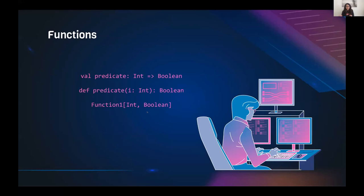In general, for a function with one argument, the compiler will automatically treat it as type Function1 — which is built into Scala — with the input type and the output type. For two arguments it would be Function2, and so on. The compiler automatically translates our functions to these data types.